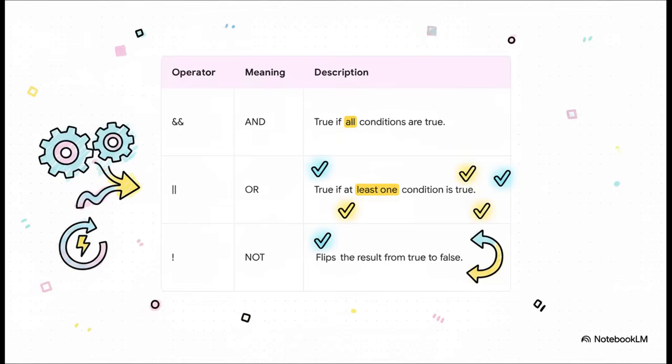First up is AND, which we write with two ampersands. Just think of AND as the really strict one. It's the bouncer of logic. It will only say true if every single part of the question is true. No exceptions. Then you've got OR, written with those two vertical lines. OR is way more chill. It says true if just one of the conditions is true. And finally, there's NOT. The simple exclamation mark. It just flips the final answer from true to false, or false to true.